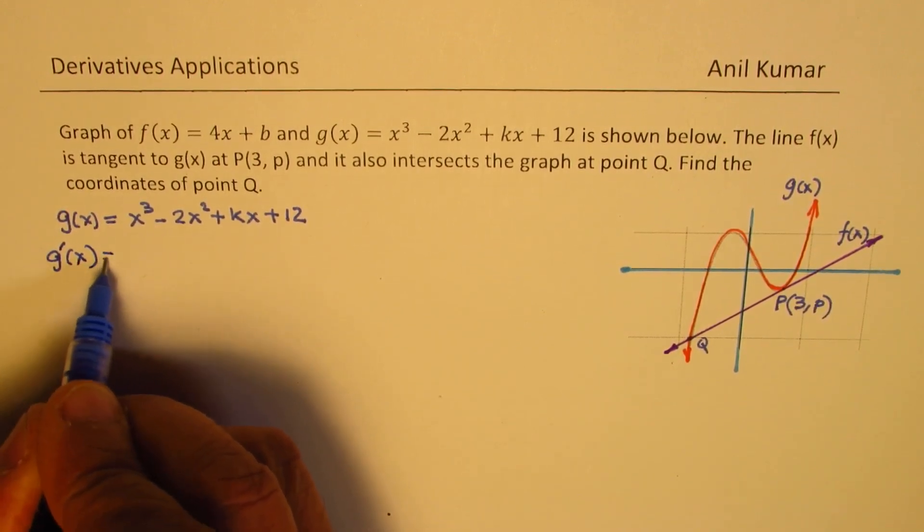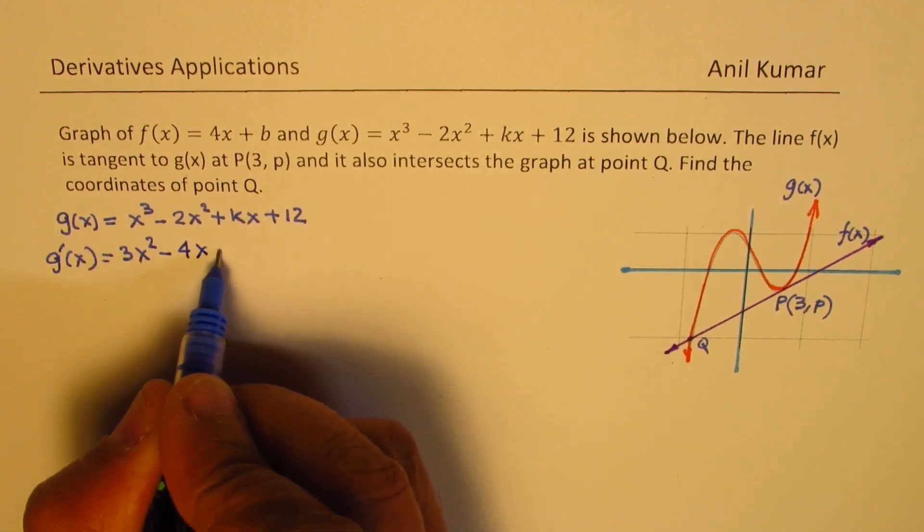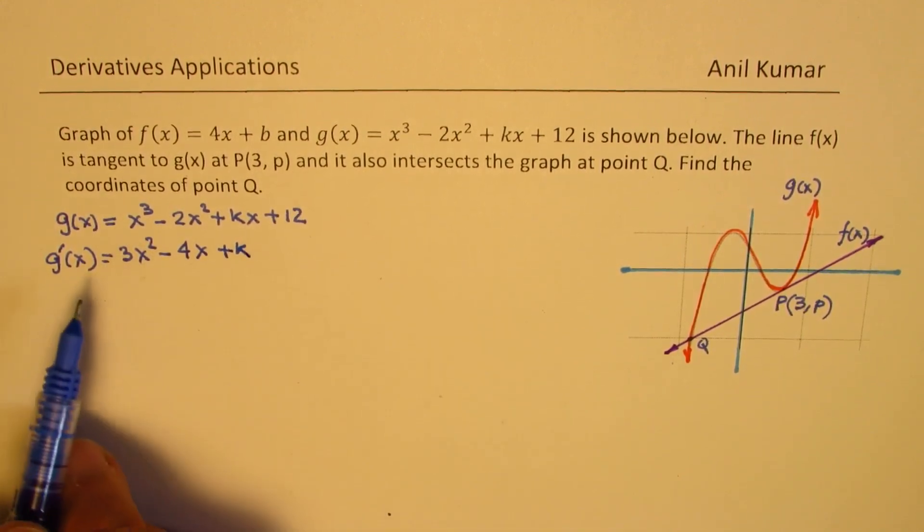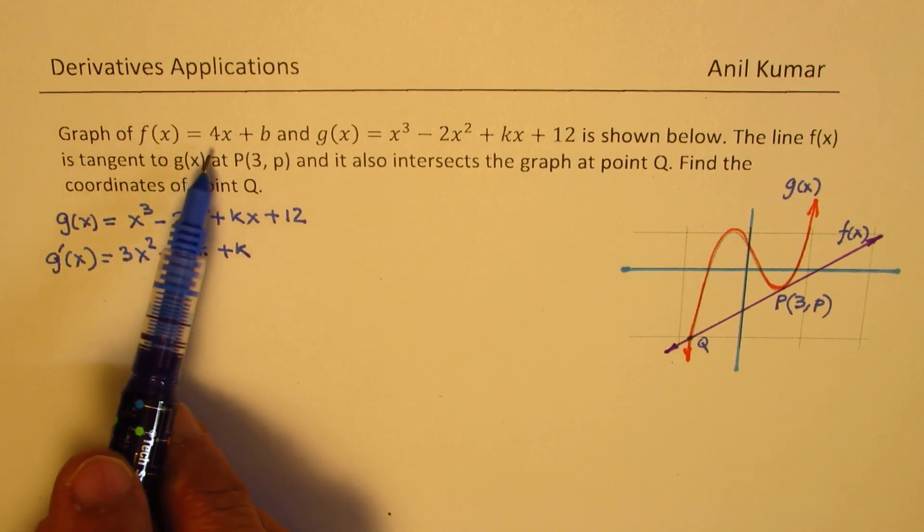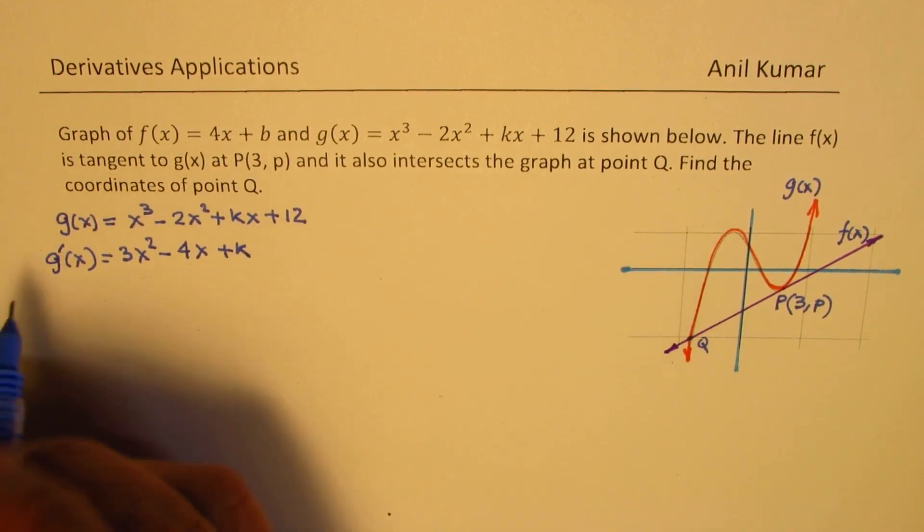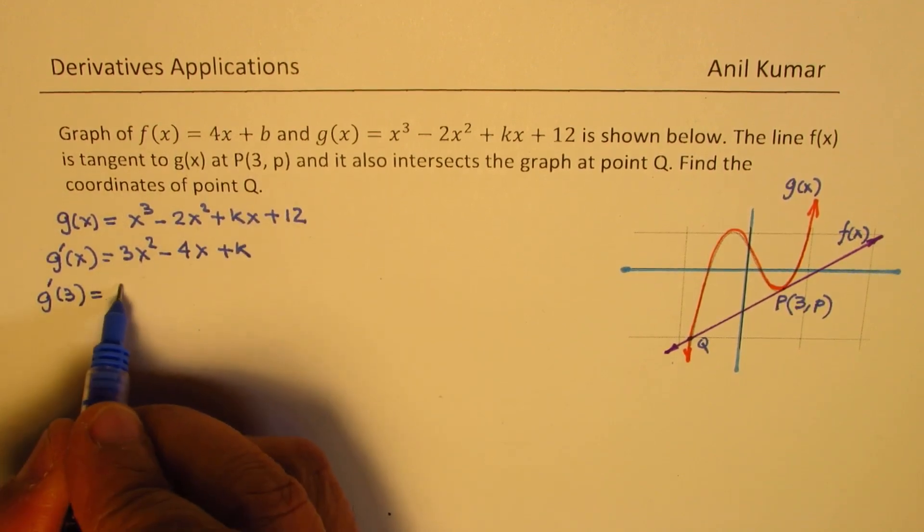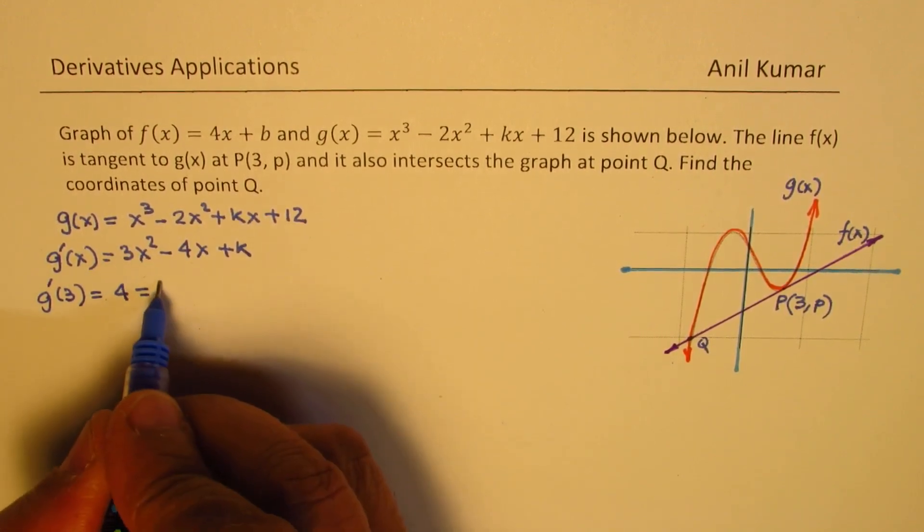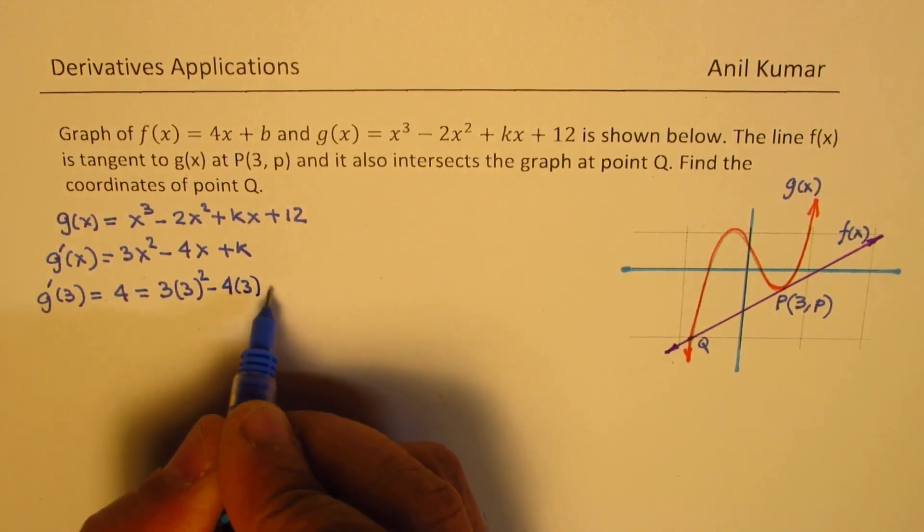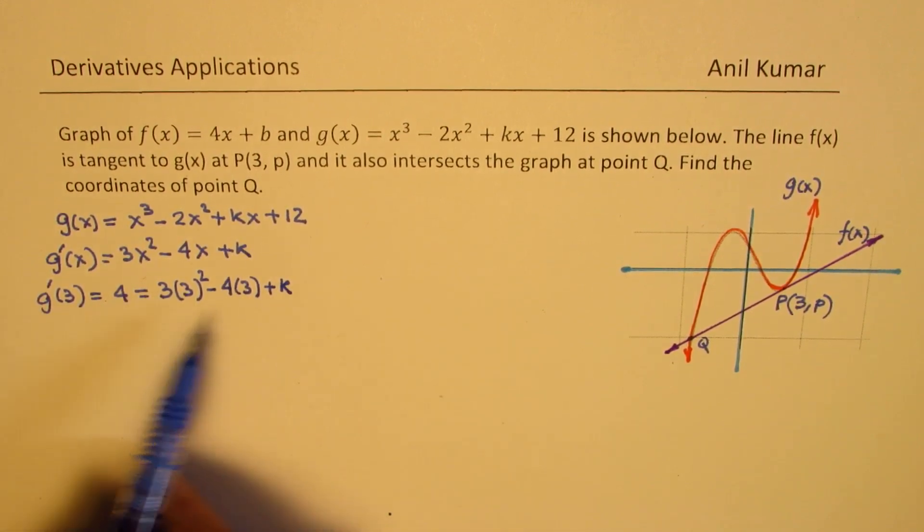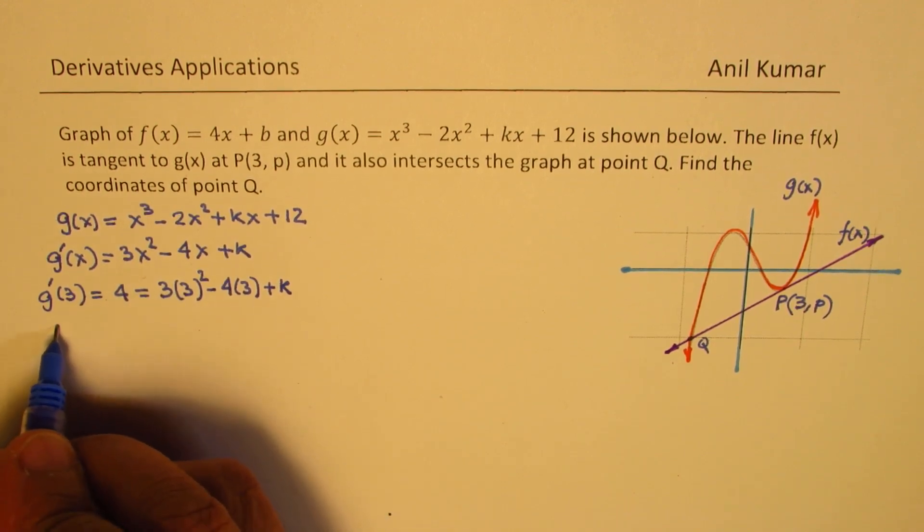So the derivative of this can be written as g'(x) = 3x² - 4x + k. Now at x = 3, the slope is the same as that of the tangent line, right? So g'(3) should be equal to 4. So substitute 3 here. We'll get 3(3²) - 4(3) + k. So that helps you to find the value of k.